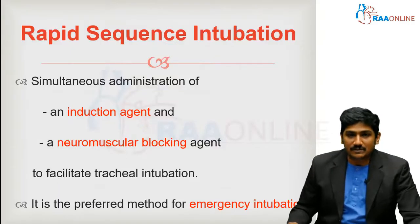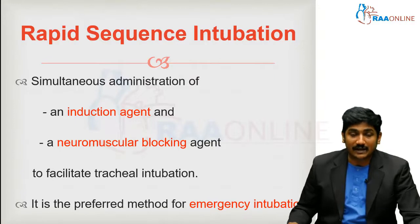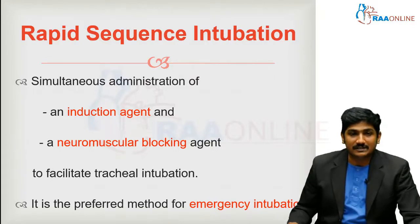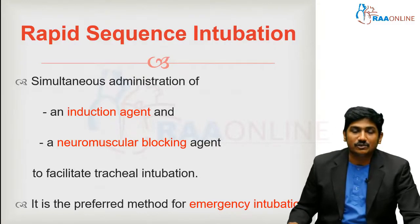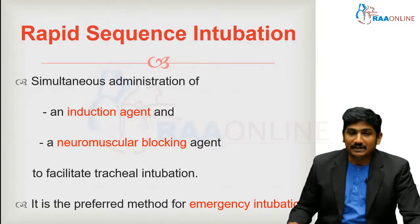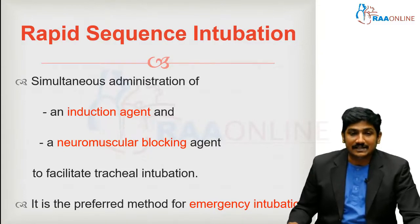Rapid Sequence Intubation is a tactic of achieving a definitive airway by simultaneous administration of an induction agent followed by a neuromuscular blocking agent, so that immediate unconsciousness and paralysis is achieved in a patient to facilitate tracheal intubation.